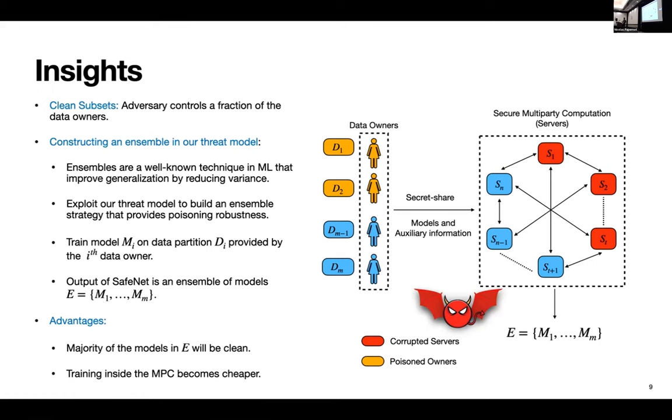However, what we want to do is not only improve generalization, but we also want to get poisoning robustness here. So what we can do is, instead of combining all the data sets together in the MPC and then creating subsets to train models, we instead directly train the models on the data partition from each owner. And this is how we create the ensemble instead of combining. So what are the advantages of doing it this way is first, the majority of the models in the ensemble will be clean. And secondly, you can make the training phase inside the MPC much cheaper because now the data owner can train the model itself and submit that to the MPC instead of MPC training the model for him.